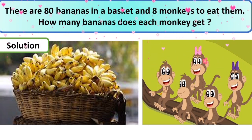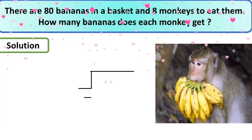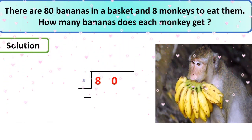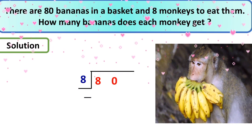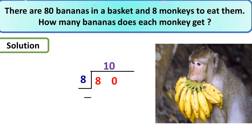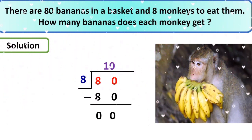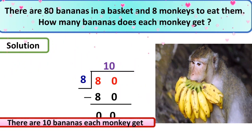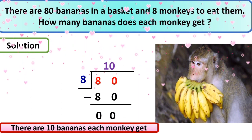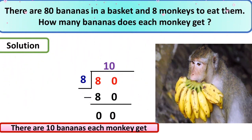Yes, so now we start the sum. We are going to solve it practically. 80 you write inside, 8 outside. Read the times table of 8 until 80 comes. Yes, 8 tens are 80. 80 minus 80, you get zero. So it means there are 10 bananas each monkey gets. How many bananas does each monkey get? 10 bananas.